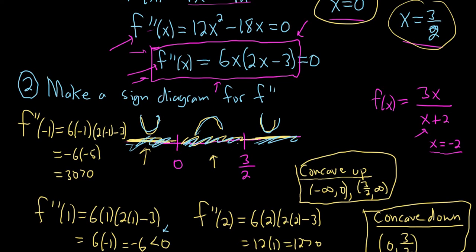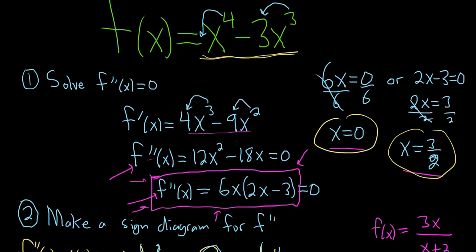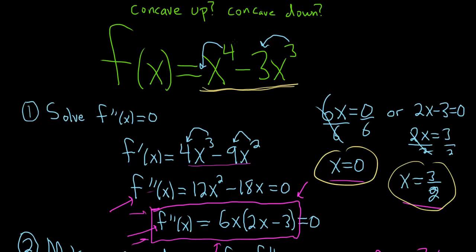So it'll be concave up from negative infinity to 0 and also from 3 halves to infinity, and concave down from 0 to 3 halves. These points right here, this x value here 0 and this x value here 3 halves, so the point on the graph where the concavity changes is called an inflection point. So we actually have two inflection points in this problem, one at 0 and one at 3 halves. However, the original question did not ask for those. If you wanted to find the actual point, you would just take the 0 and you would take the 3 halves and you would plug it back into this original function here, and that would give you the inflection point.